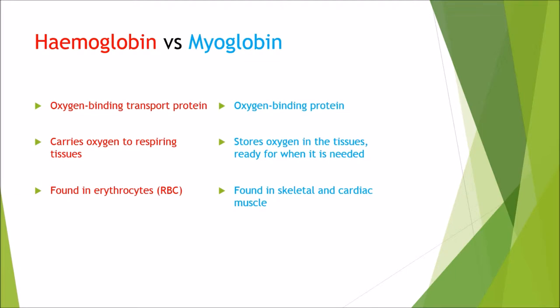Here is a quick summary of the differences and similarities between Hemoglobin and Myoglobin. Hemoglobin is an oxygen-binding transport protein, whereas Myoglobin is purely an oxygen-binding protein. Hemoglobin carries oxygen to respiring tissues, whereas Myoglobin stores oxygen in tissues ready for when it is needed. Hemoglobin is found in red blood cells, or erythrocytes, whereas Myoglobin is located within skeletal and cardiac muscle.